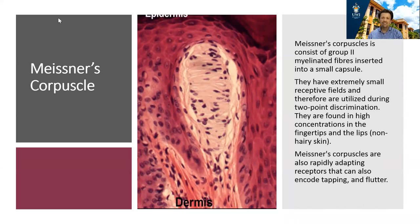Meissner's corpuscles, because of these features, are found in high concentrations in parts of the body where you want high levels of two-point discrimination — for example, the fingertips and the lips. Meissner's corpuscles are also rapidly adapting, like the Pacinian, and therefore they can also encode vibratory information, as occurs in tapping.